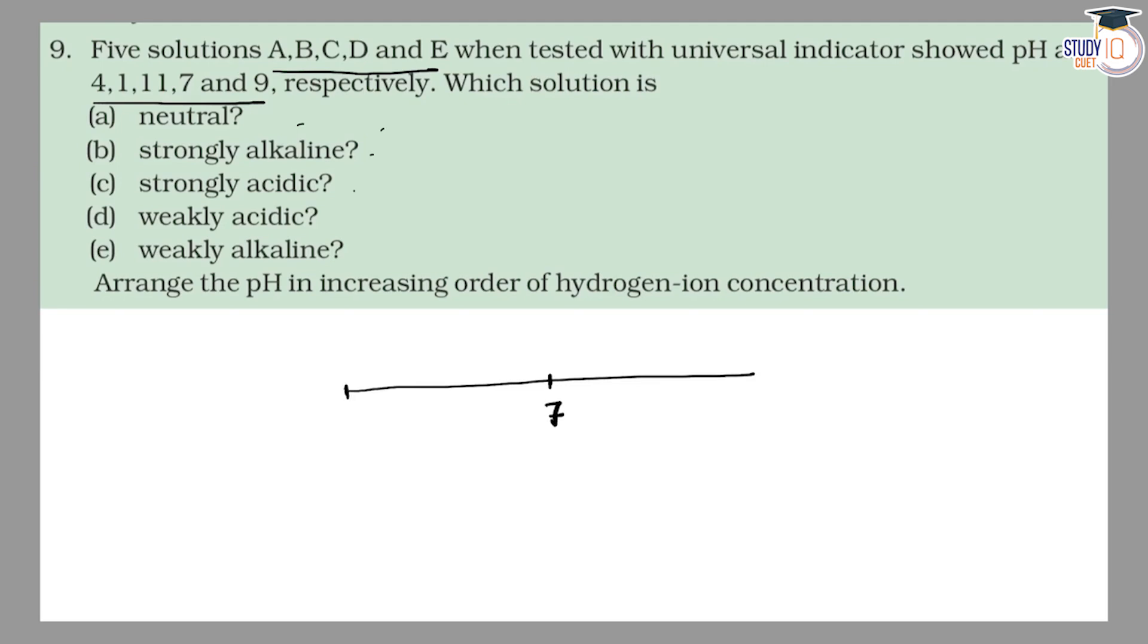The smaller the number from 7, the more acidic behavior we get. And from 7 onwards, alkaline behavior. So the higher the number, the more alkaline it becomes.